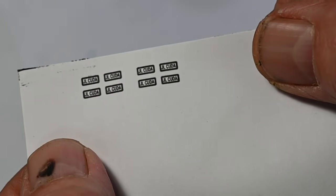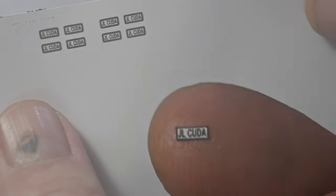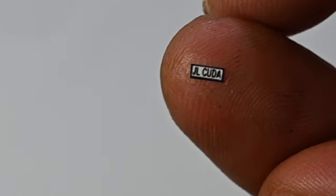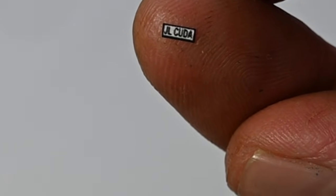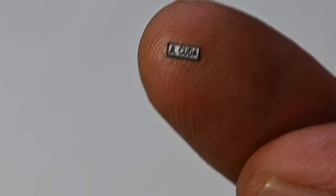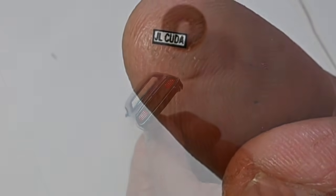And on some standard A4 paper, I've printed out some little JL Cuda license plates. I'll just cut a couple of those out. I used a little bit of PVA glue to glue them on.